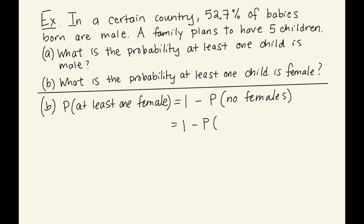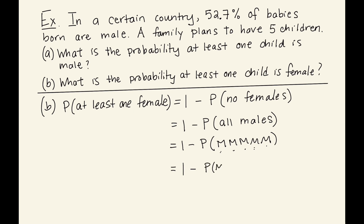Another way to say no females is to say all males — every single child is male. So this is one minus the probability of male for the first child, and male for the second, third, fourth, and fifth child. Since the gender of each child is independent in each birth — having a male first baby doesn't affect the probability of the second — we can use the multiplication rule for independent events. This gives us one minus the probability of male raised to the fifth power.